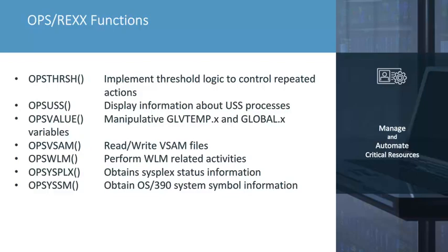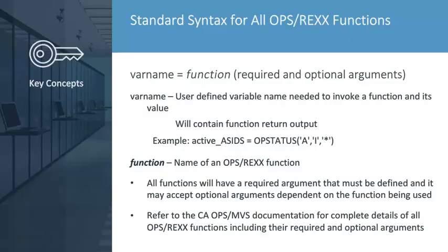You will find the complete list of functions within the commands and functions manual of the CA OpsMVS documentation. Just like TSO/E REX functions, OpsRex functions have a standard coding syntax. A user-defined simple variable name is needed to call or invoke the function, and the name of this variable should reflect the type of data the function is obtaining. For example, if the OpsStatus function is being used to obtain all active ACIDs, a variable name of ALL_ACIDs or ACTIVE_ACIDs would logically identify this return data. All functions are invoked with required arguments as well as optional arguments depending on the function utilized. Complete details of all OpsRex functions, including purpose, syntax, and coding samples, can be found in the command reference manual of the OpsMVS documentation.